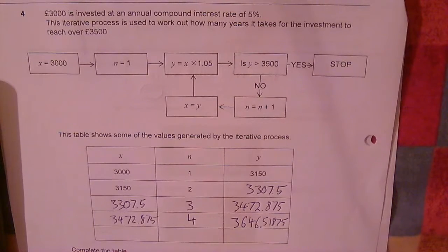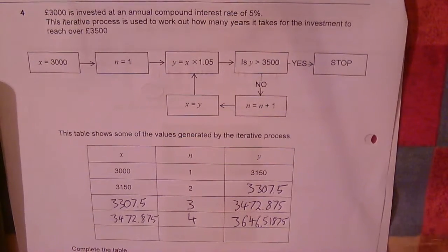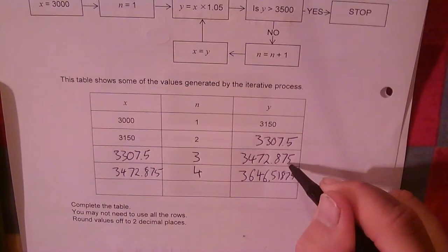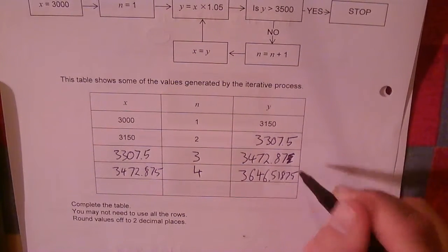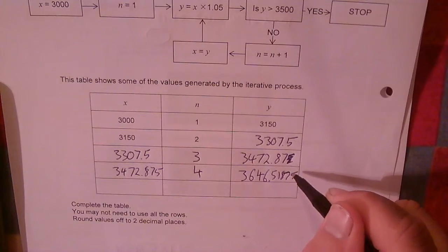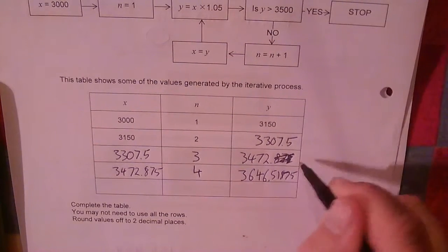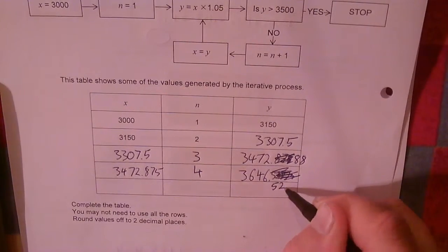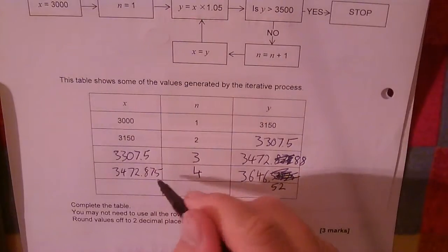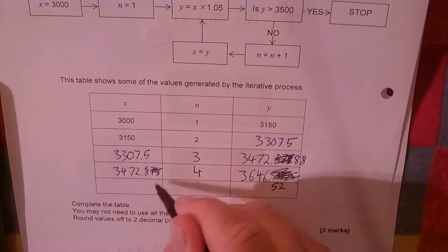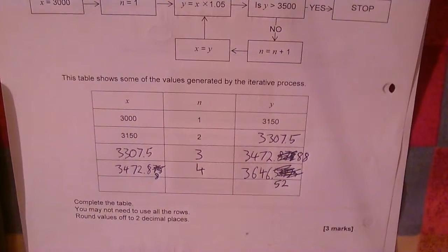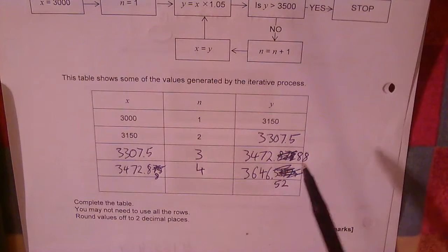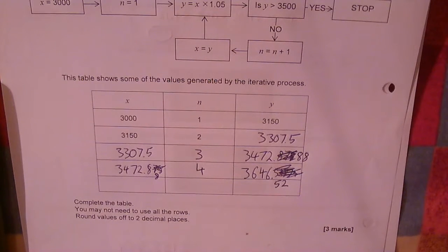Round values to two decimal places, it says. Oh, I didn't read that. So could have rounded this off at two decimal places. So this would be 8,8. And this would be 5,2. That's an error on my behalf, not fully reading the question before tackling it.